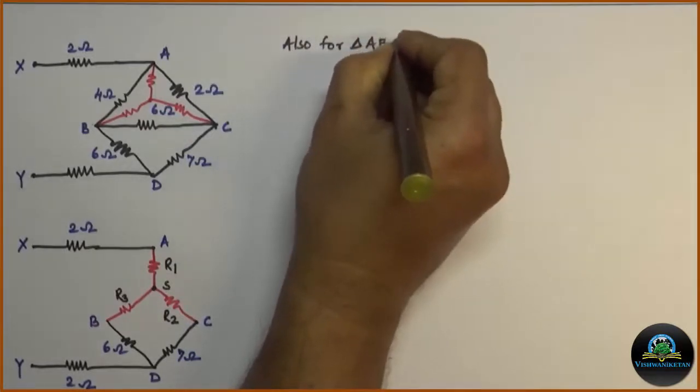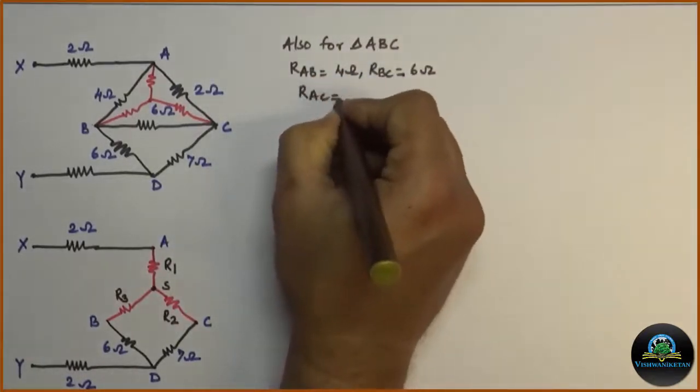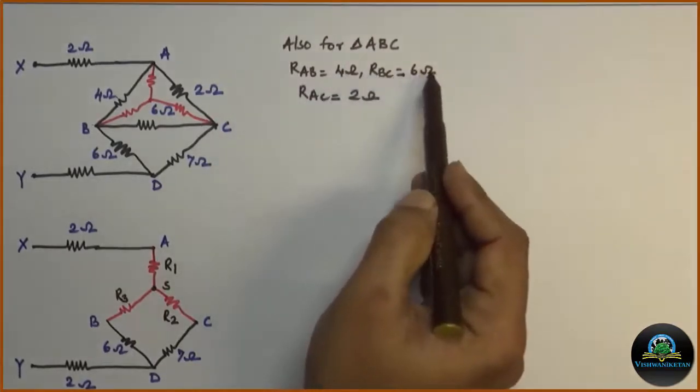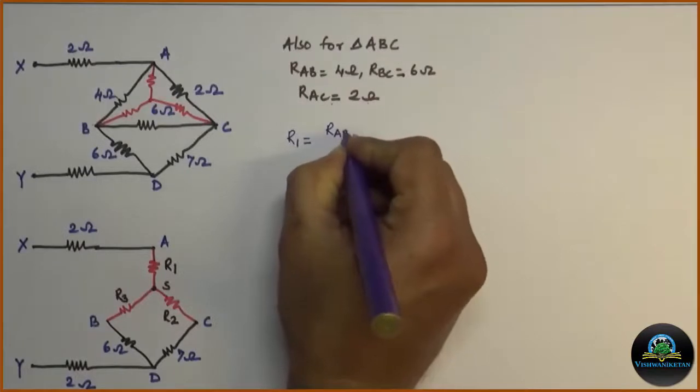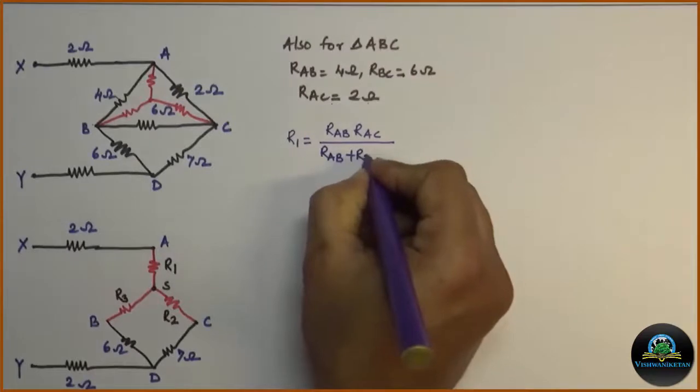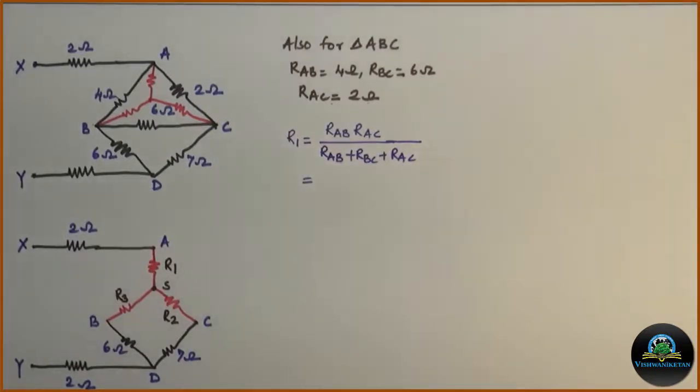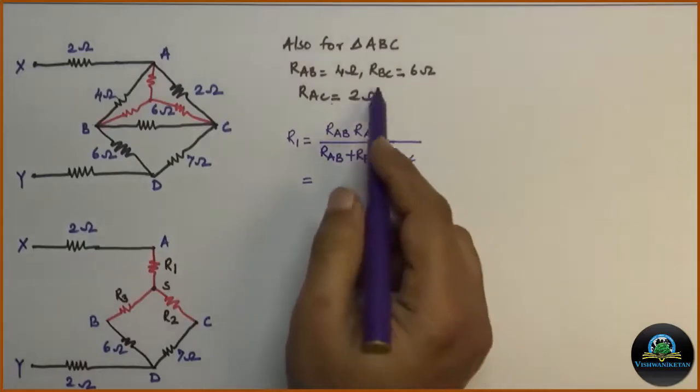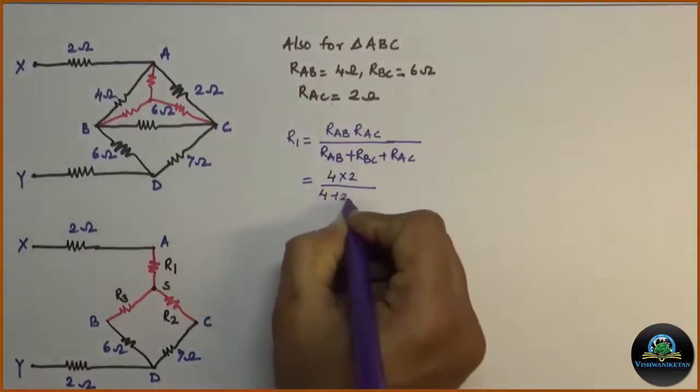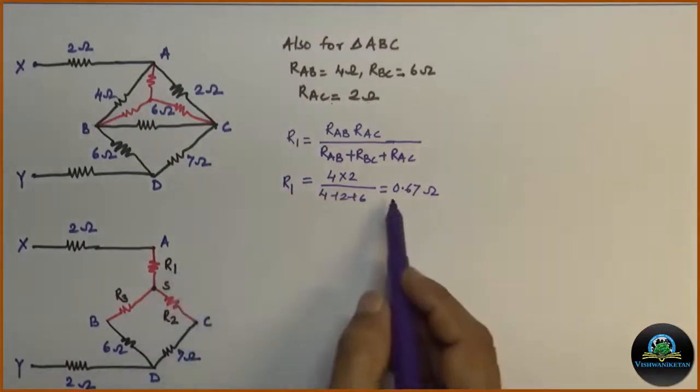for delta connection ABC, RAB is 4 ohm, RBC is 6 ohm and RAC is 2 ohm. From delta to star conversion expression, we have R1 is equal to RAB into RAC divided by RAB plus RBC plus RAC. Substitute the values, so we will get RAB is 4 ohm, RAC is 2 ohm and RBC is 6 ohm. So, I got value of R1 as 0.67.